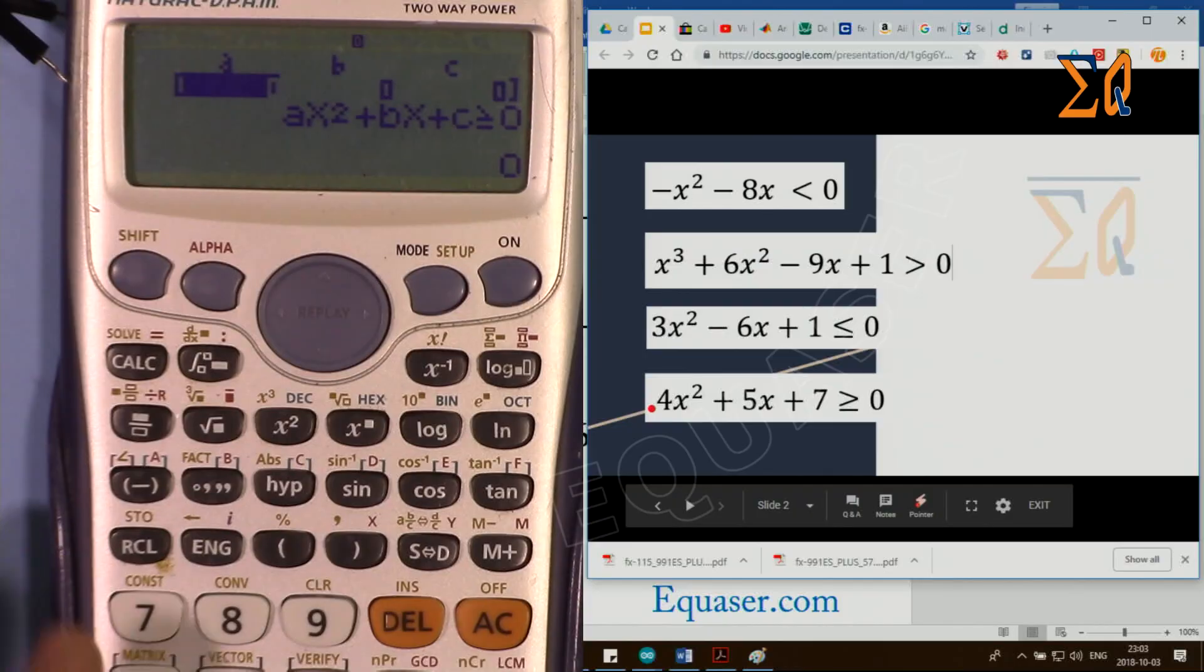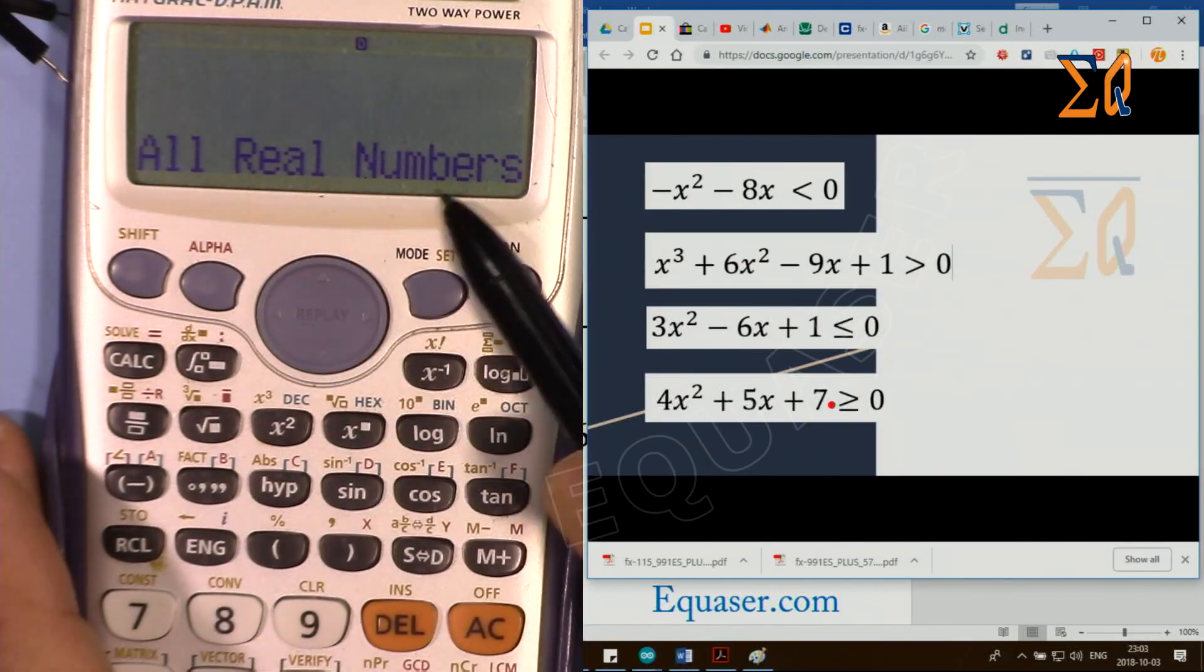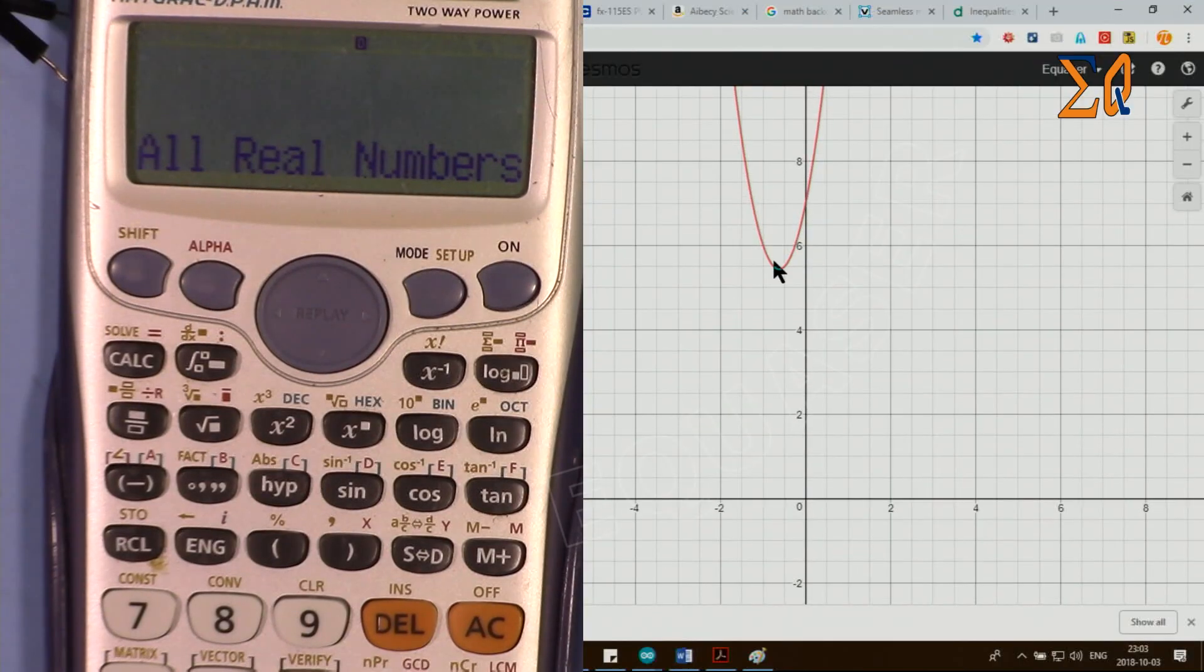So a is 4, equal, b is 5, and then equal, and c is 7. Once you select it, it says all real numbers. It's valid for all real numbers.